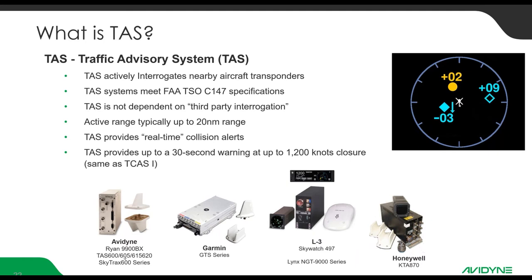As you move up through different performance airplanes to the TAS 620, you get longer range and therefore more protection based on your speed, such that you're always getting at least 30 seconds of warning at 1,200 knots of closure regardless of the speed of your airplane. Since then we've added ADS-B in to the TAS 600 and rebranded it as SkyTrack 600 — so now it's not only an active TAS, it's also an ADS-B in receiver. It melds those targets together and gives you the best of both.